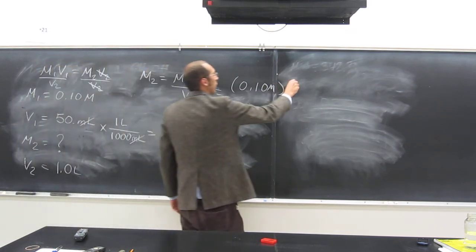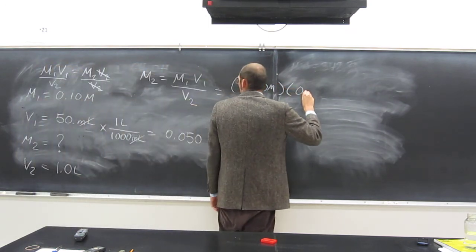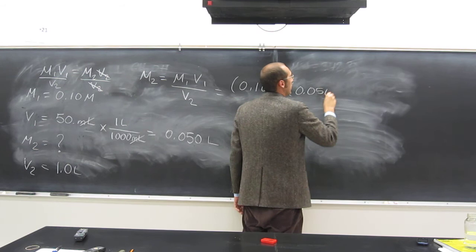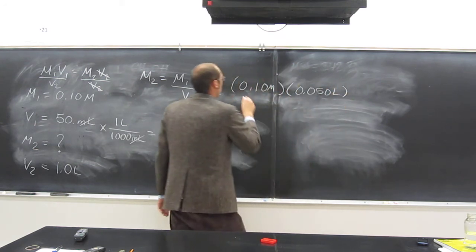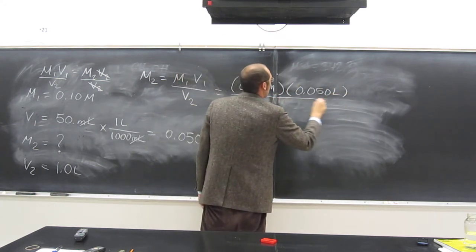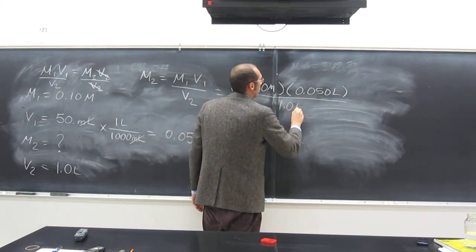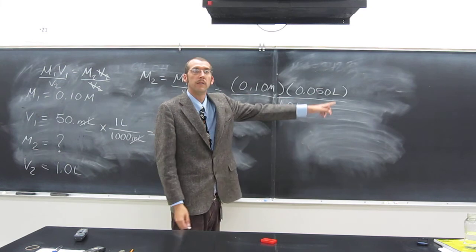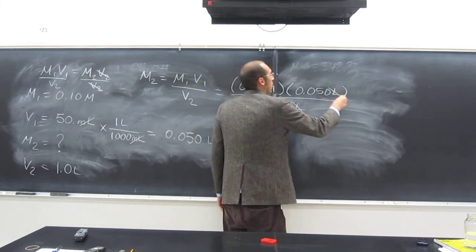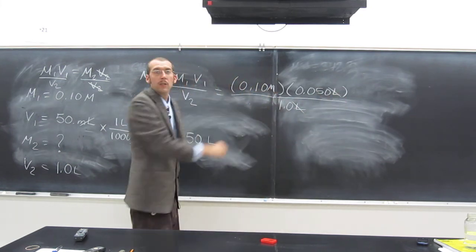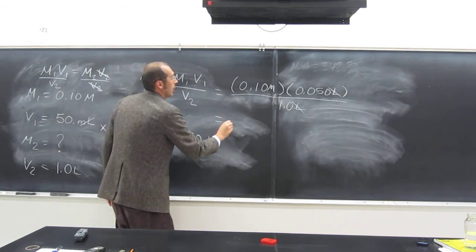Do we know V1? Yes, 0.050 liters divided by V2, 1.0 liters. Does anything cancel out? Liters cancels. And does that give you a concentration unit? Yeah. Okay.